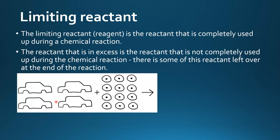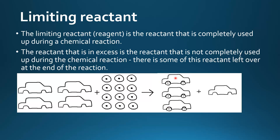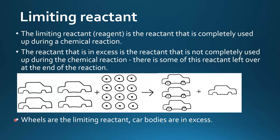To make 4 complete cars we need 16 wheels, but we only have 12. Therefore we can make 3 complete cars. We have 3 car bodies and need 12 wheels, so all the wheels have been used up and we are left with 1 car body. Therefore the wheels are the limiting reactant in this example and the car bodies are in excess — all the wheels have been used up and we have 1 car body left over.